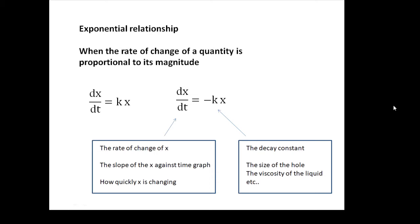dx/dt equals minus kx. dx/dt is proportional to x. The rate of change of x is proportional to x. How quickly x is changing is proportional to how big it is. dx/dt is the rate of change of x. It's the slope of the graph. It's how quickly x is changing.